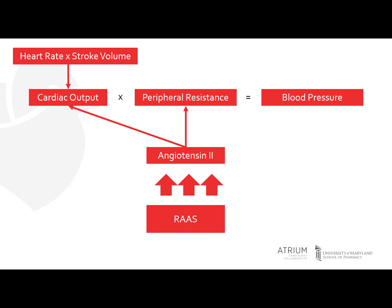The reason for this is that angiotensin 2 leads to production of aldosterone, which leads to sodium retention and water reabsorption. That leads to an increase in your stroke volume, which increases your cardiac output. So angiotensin 2 actually increases both your cardiac output and your peripheral resistance, which both will increase your blood pressure.